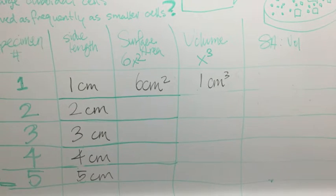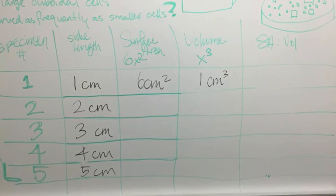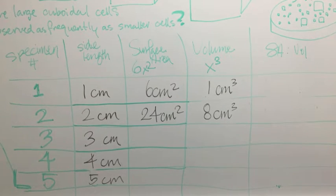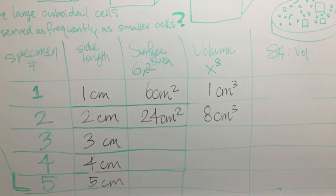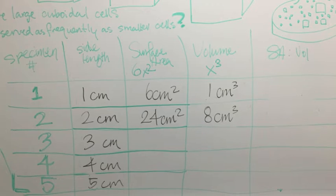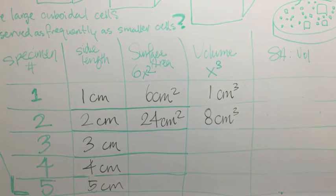We can repeat this process for the following specimens. So for specimen two, we get a surface area of, that's right, 24 centimeters squared. And for the volume, where we use x³, we get 8 centimeters cubed.